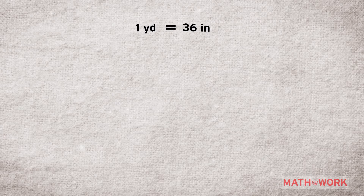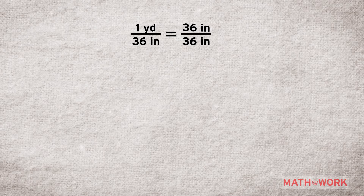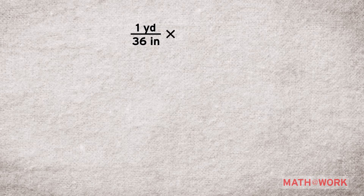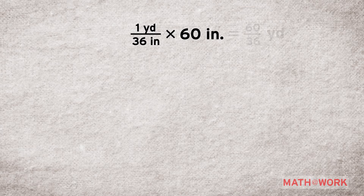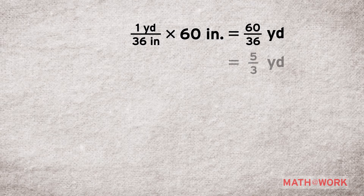We start with what we have, and then we multiply by the conversion rate — a number that's equivalent to 1. One yard over 36 inches, times 60 inches, is equal to 60 over 36. Simplified, that's 5 thirds, or 1 and 2 thirds yards.